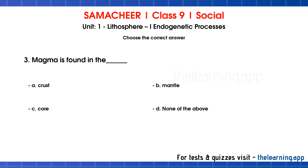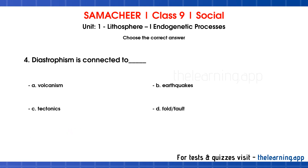Third question — magma is found in the dash. Options: A crust, B mantle, C core, D none of the above. Correct answer is option B: mantle. Magma is a molten liquid rock found in the mantle. Fourth question — diastrophism is connected to dash. Options: A volcanism, B earthquake, C tectonics, D fold or fault. Correct answer is option D: fold or fault.